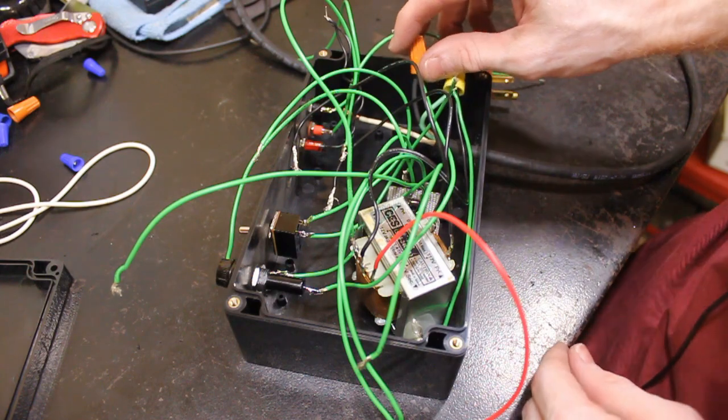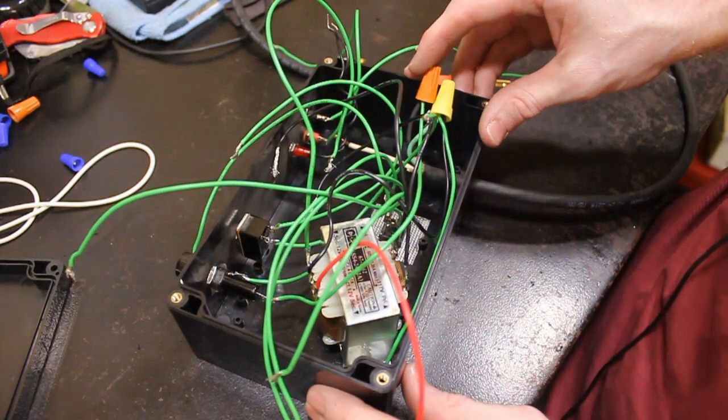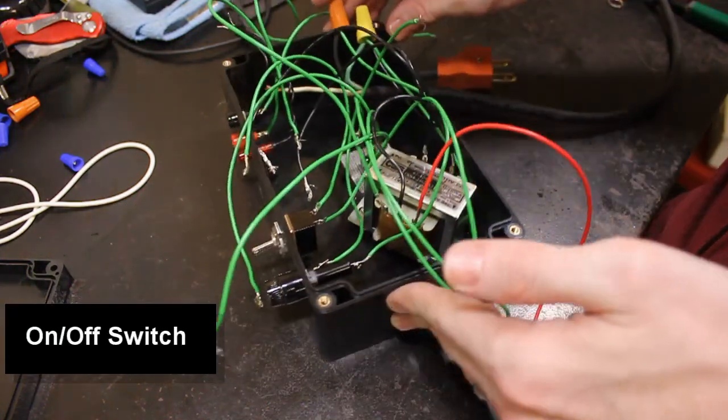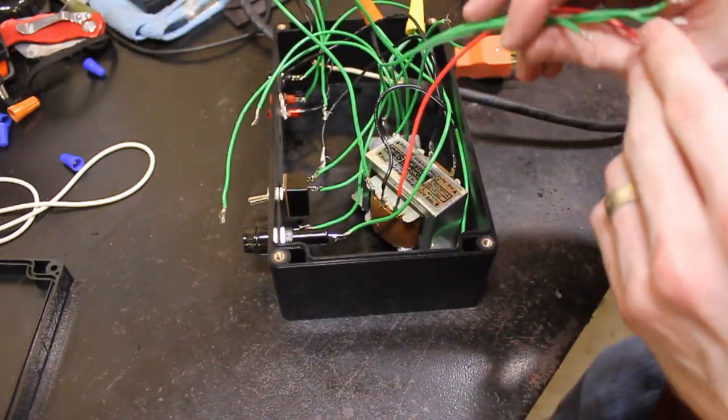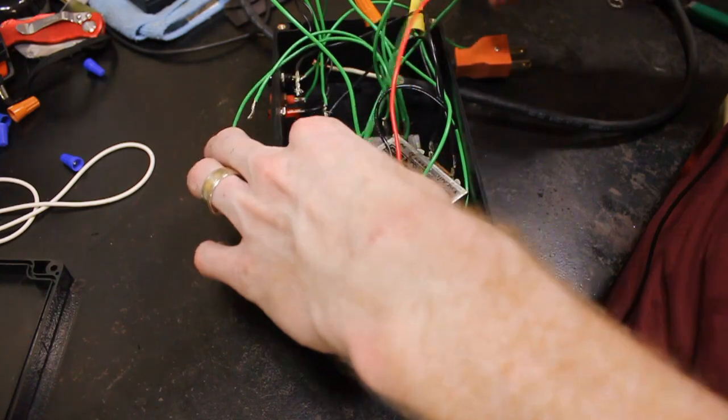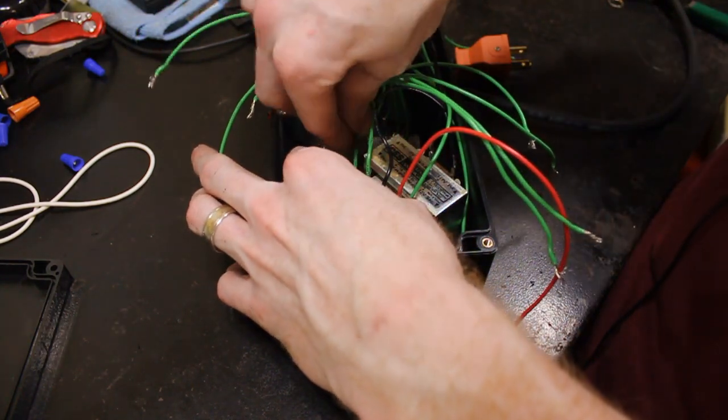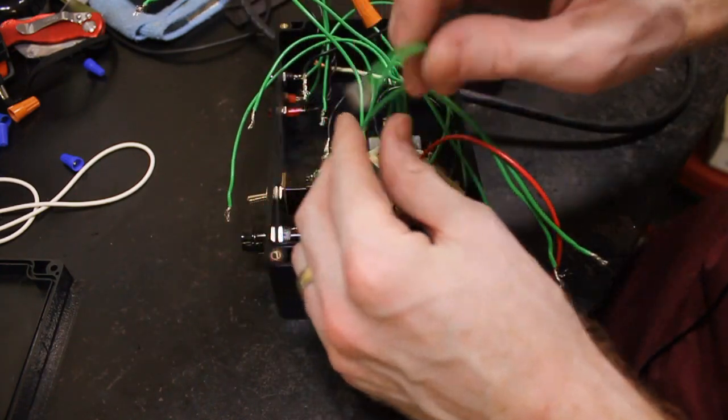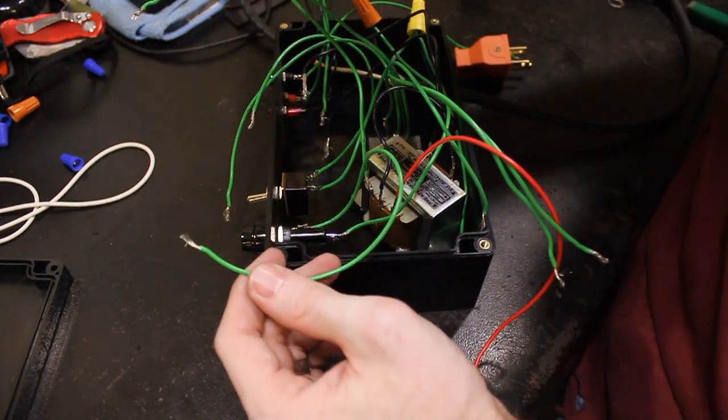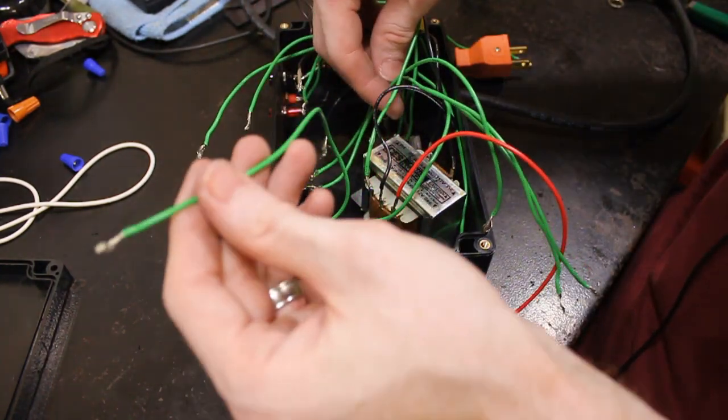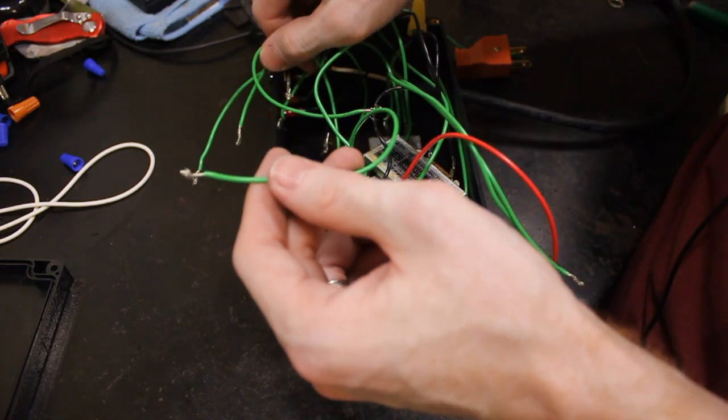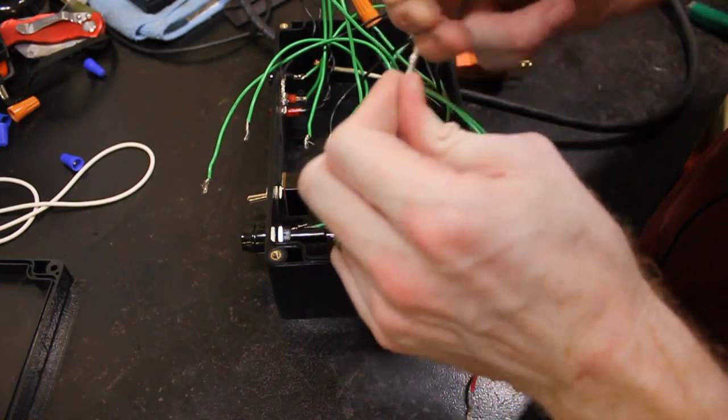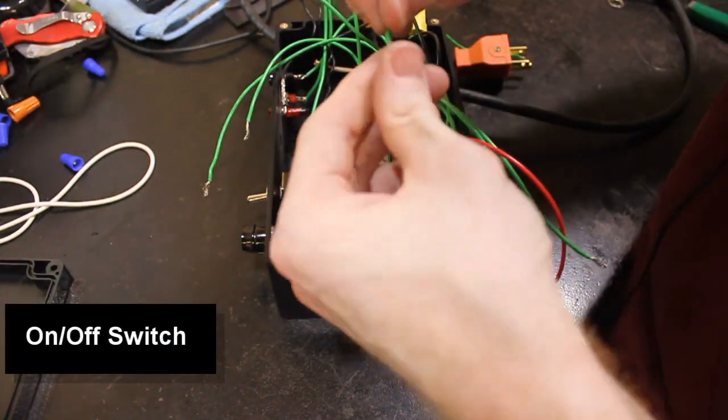So then we'll go from our fuse over onto our switch. So this is our second fuse line right here. You can see, I cut these a little too long for this project. It's going to be a rat's nest. But anyway, we'll go from our fuse to our switch power switch.